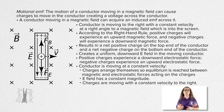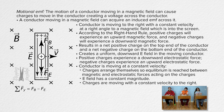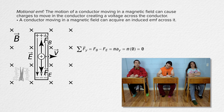Billy, please sum the forces in the y direction on a positive charge in the conductor moving to the right at a constant velocity. The net force in the y direction equals the magnetic force minus the electric force, which equals mass times acceleration in the y direction. Because the charge moves at constant velocity, acceleration in the y direction equals zero, meaning the magnitudes of the magnetic force and the electric force are equal.